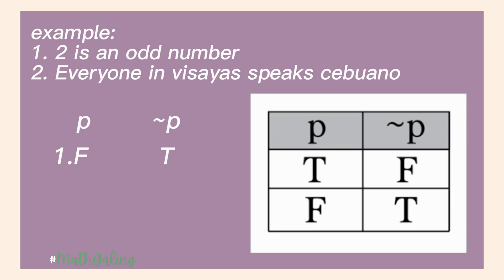Example 2: 'Everyone in Visayas speaks Iguano.' We all know that in Visayas there are many local dialects, and one of them is Iguano. So of course, this is a false statement, and it is F. And again, not false will be true.